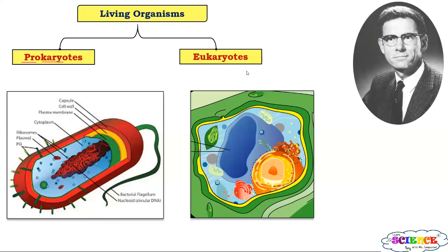Organisms in which there is a well-defined nucleus present are called eukaryotes. 'Eu' means true and 'karyo' means nucleus. So organisms in which cells have a well-defined nucleus are called eukaryotes. For example, plant cells and animal cells — they have a nucleus present. The first classification is into two types: prokaryotes and eukaryotes, on the basis of cell structure.